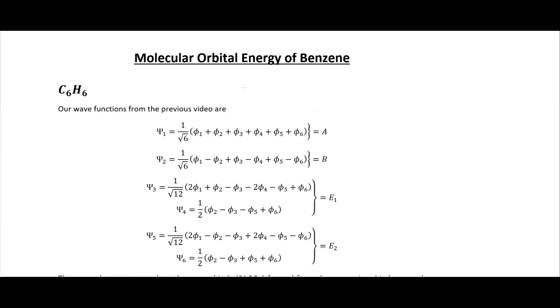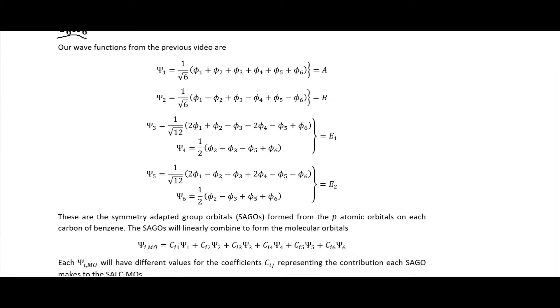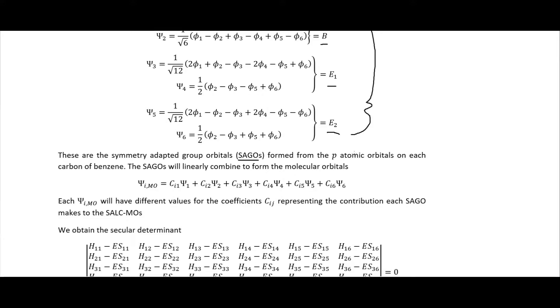In this video we will be finding our relative molecular orbital energies for benzene, which is our C6H6 ring. Benzene is aromatic, and in the last video we found these symmetry adapted group orbitals — the SAGOs formed from the P atomic orbitals on each carbon of the benzene ring. The SAGOs will be linearly combined to form the SALC MOs — the symmetry adapted linear combination molecular orbitals.